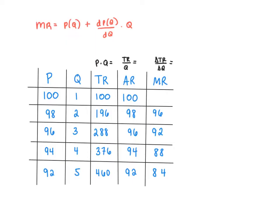To look at marginal revenue — the additional revenue generated from selling an additional unit — we go row by row and calculate the change in total revenue when there's a change in quantity. From quantity 1 to 2, total revenue goes up from $100 to $196, a change of $96. From 2 to 3 units, total revenue goes from $196 to $288, an increase of $92. Selling the fourth unit adds $88, and the fifth unit adds $84. Unlike average revenue, marginal revenue is not price — marginal revenue is less than price.